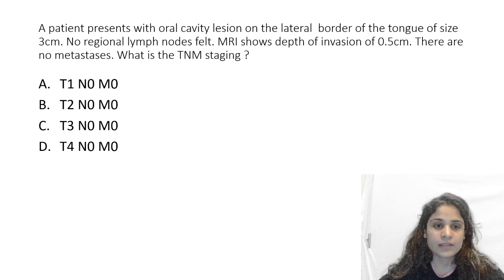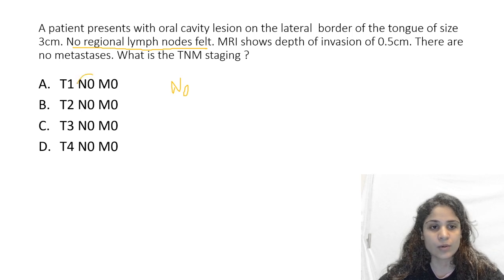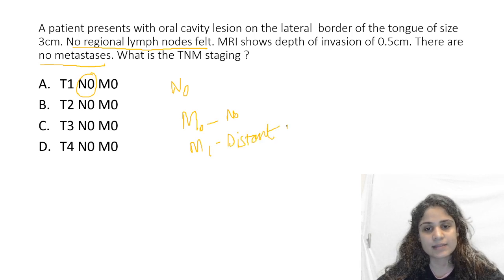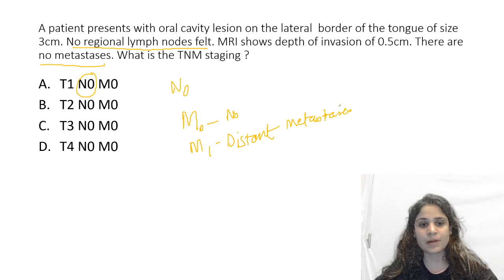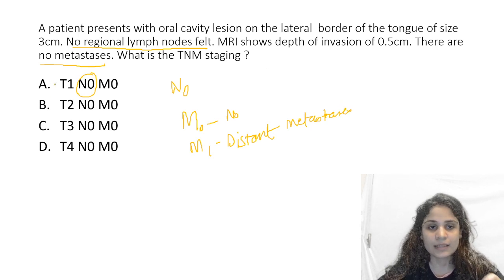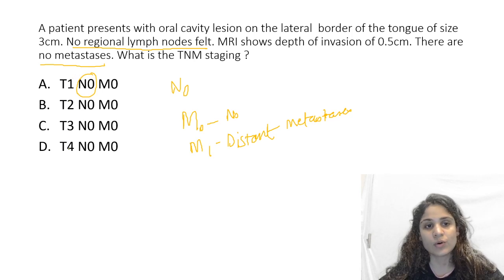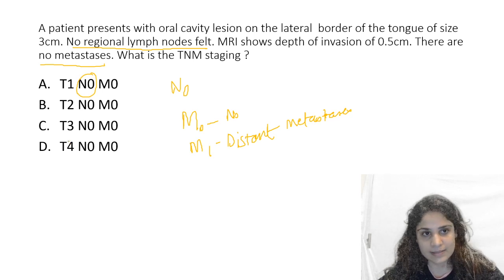Let us get the easy parts out of it first. They say that no regional lymph nodes are felt, which means N is 0 — lymph nodal involvement is 0, which we see in all four options. The next thing they say is there is no metastasis, so M0. M1 would be distant metastasis. These are the easiest parts of the TNM staging, but all four options have N0 and M0, so the only way to answer this question is by deciding whether it is T1, T2, T3, or T4 depending on the tumour size.